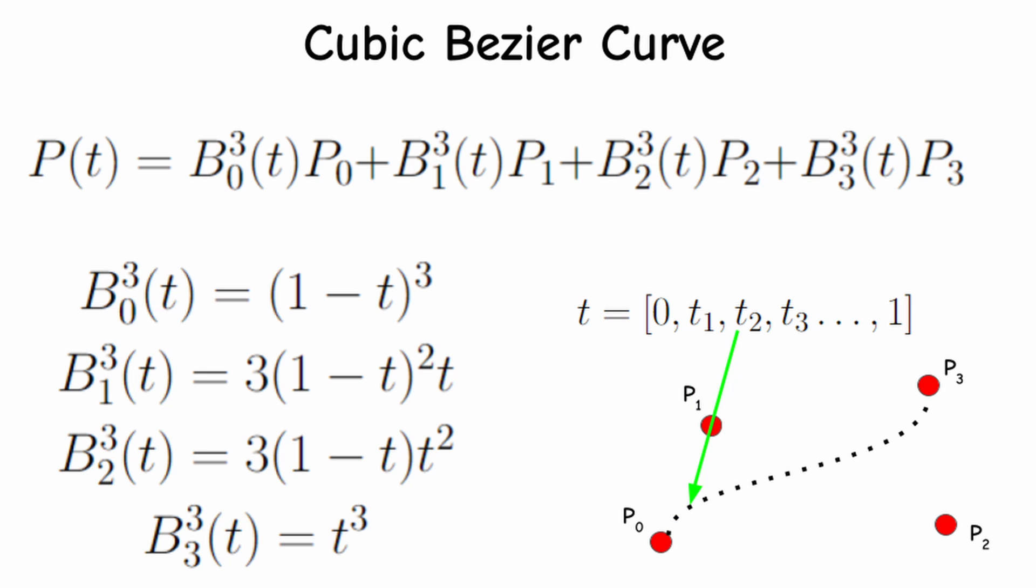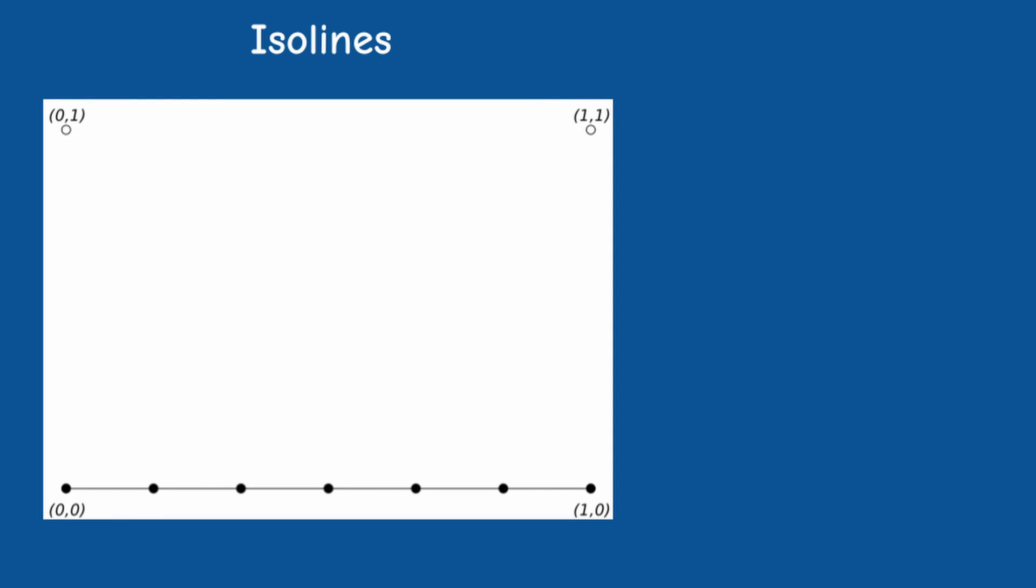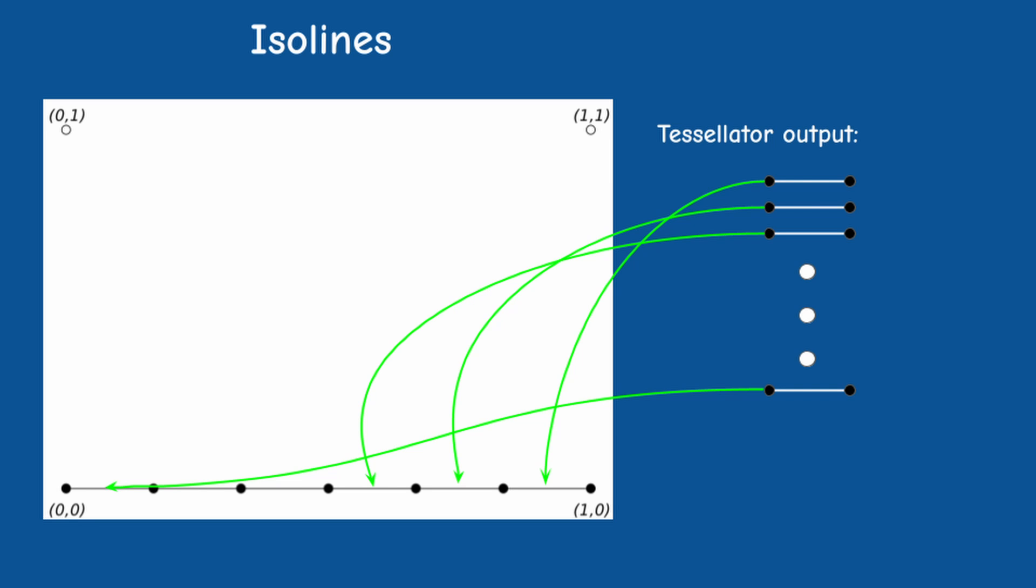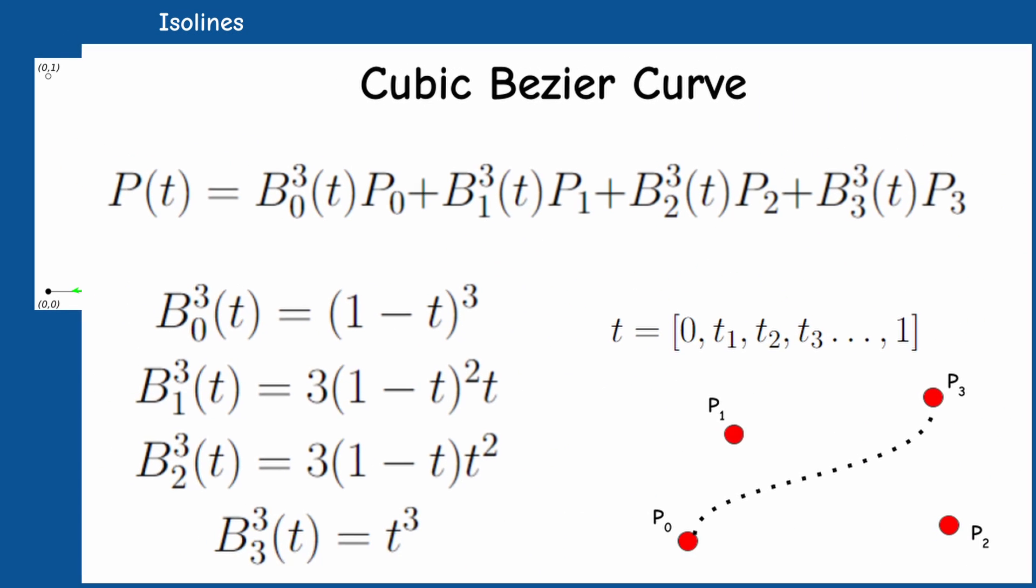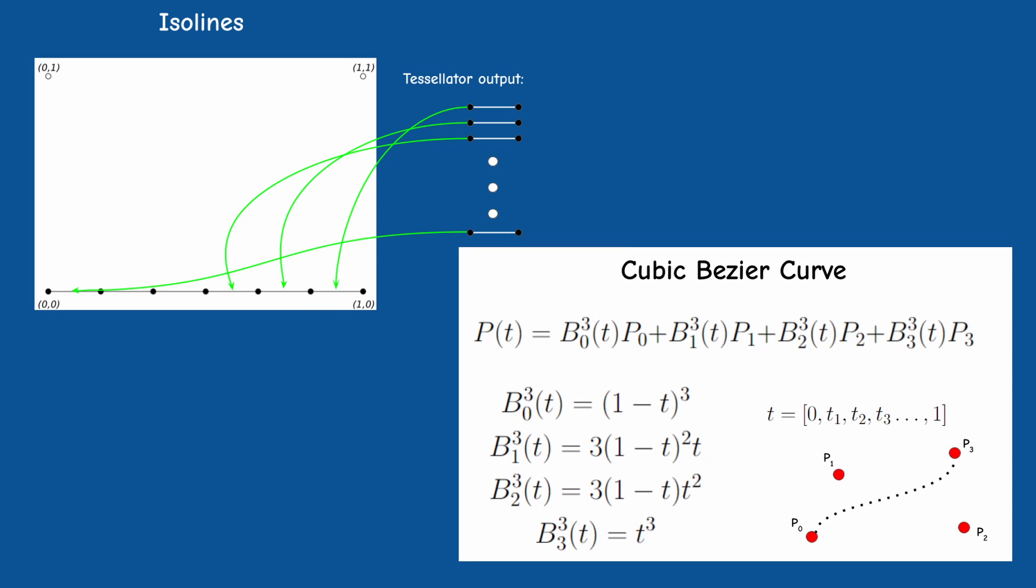So the first instinct is to divide the 0 to 1 range to whatever number of points is required and calculate the position for each value of t. We can now render line segments between each pair of consecutive points and naturally the more segments we have the smoother the result will be. That's cool but this subdivision is exactly the job of the tessellator. We can use the isolines algorithm to subdivide the single line segment to as many segments as we want. The tessellator will spit out the values of t based on the requested number of segments and the evaluation shader will use the Bezier curve equation to calculate the result for each value of t.